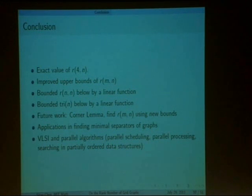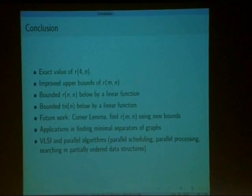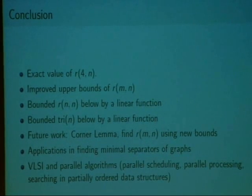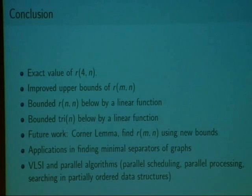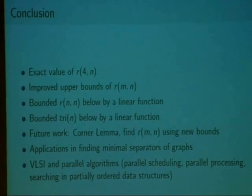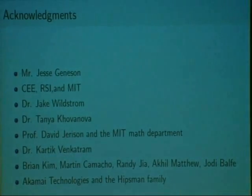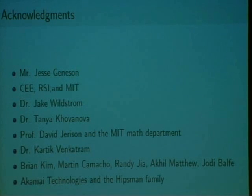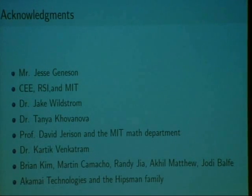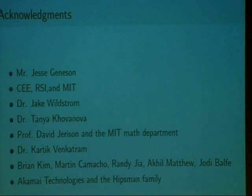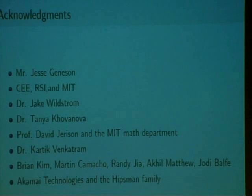So in conclusion, we found the exact rank number value for 4 by N grids. We've improved the upper bound for general grids, and we've improved the lower bound for both square grid graphs and triangle grid graphs. This has applications in finding minimal separators of graphs, which can be applied to VLSI circuit layouts and a variety of parallel algorithms. In conclusion, I'd like to thank my mentor, Jesse Jennison. I'd like to thank CERSI and MIT for giving me this amazing opportunity to do research. Dr. Jake Wildstrom for his excellent tutorship. Dr. Tanya Givanova for allowing me to see the bigger picture while working on my project. Professor Jerson and the MIT math department for putting this all together.